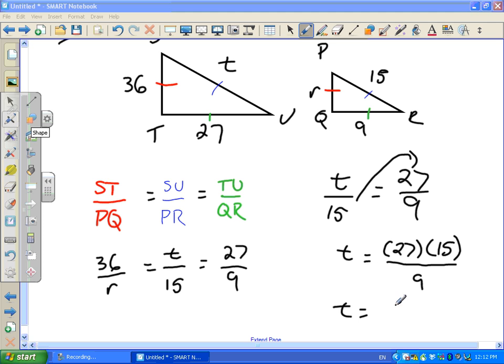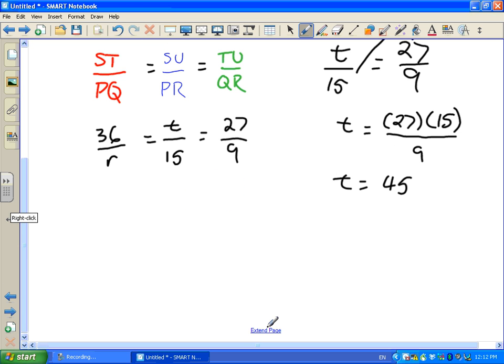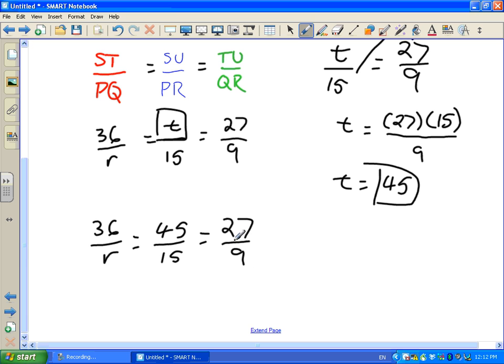So, the answer ends up being 45? Yes. Good. So, our value for T is now 45. So, in other words, I can extend my ratio here. I now have 36 over R is equal to, I can substitute our T value now, which we know is 45, 45 over 15, 27 over 9.